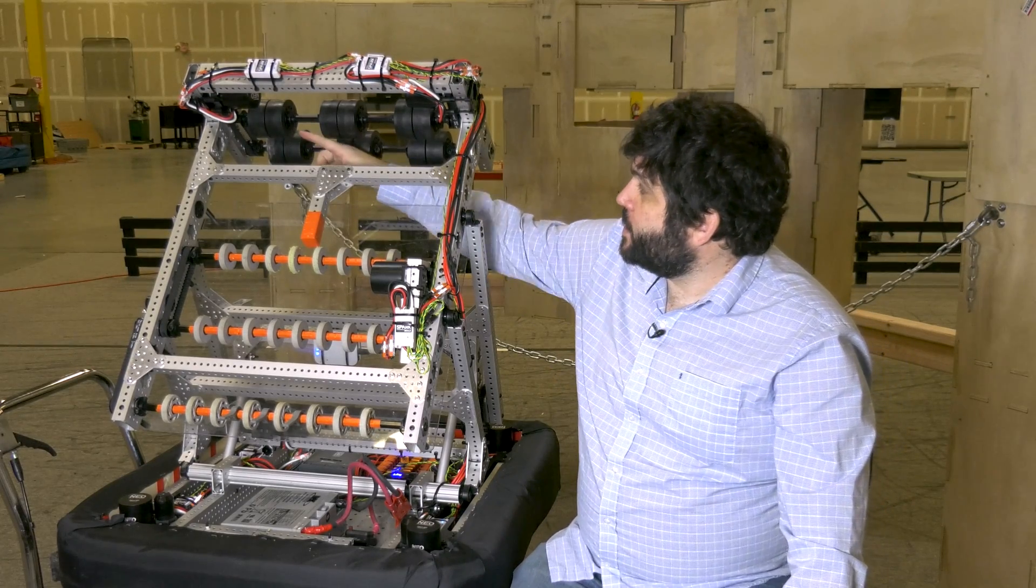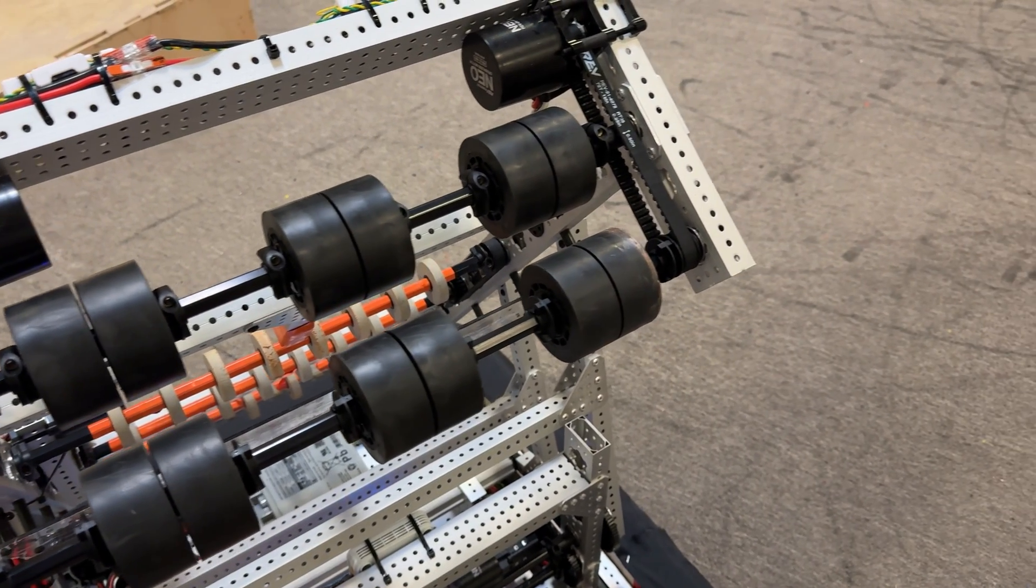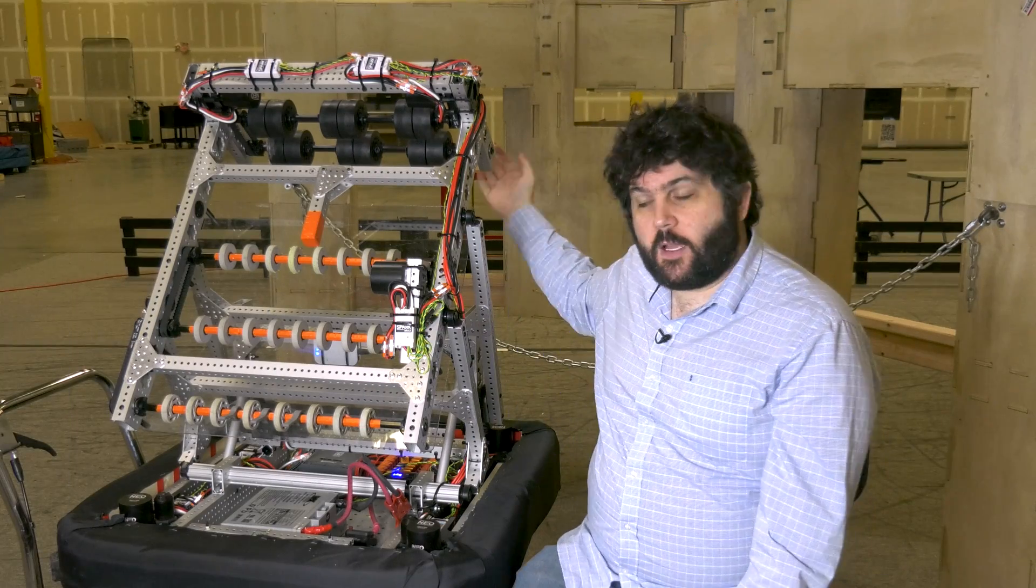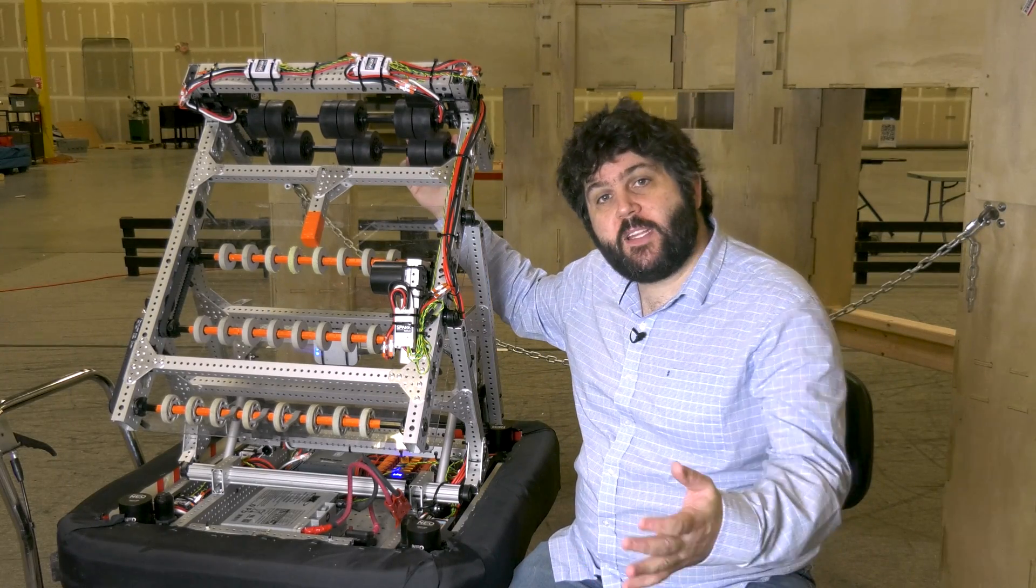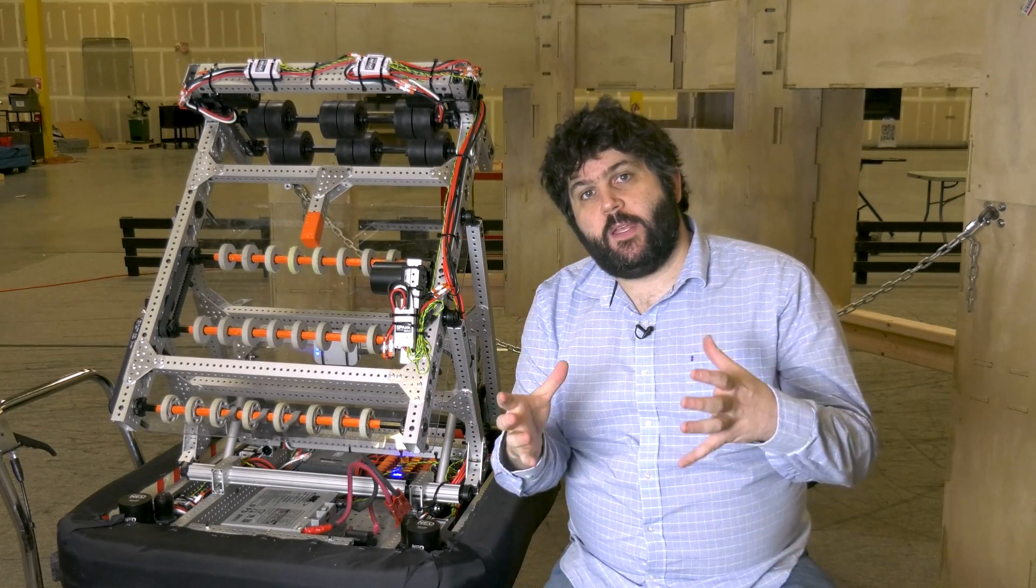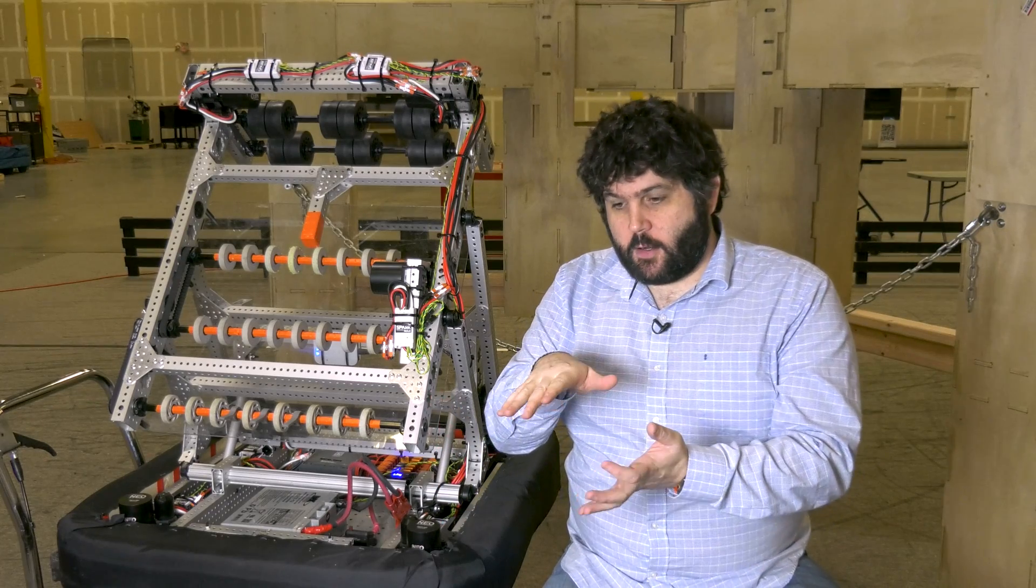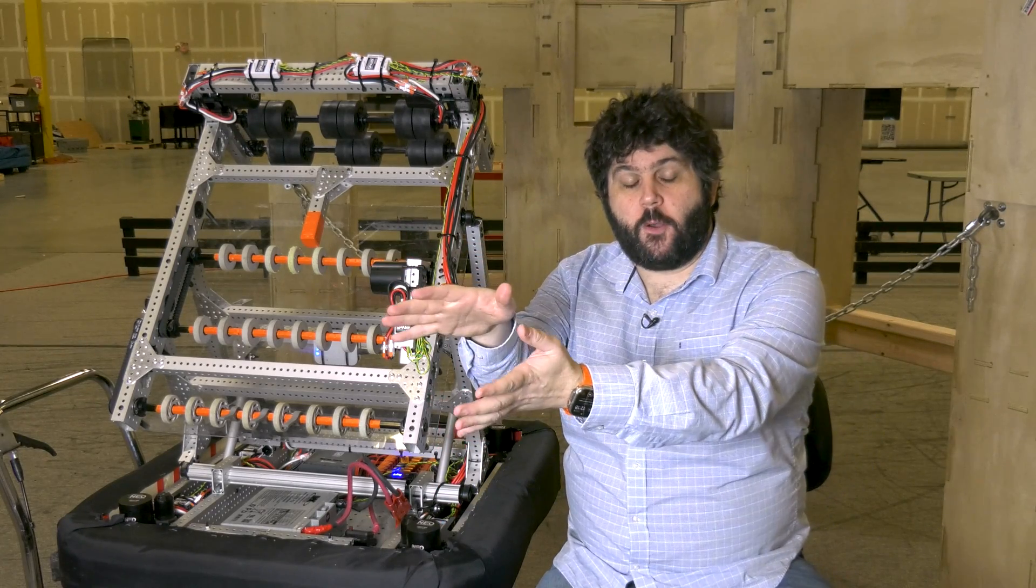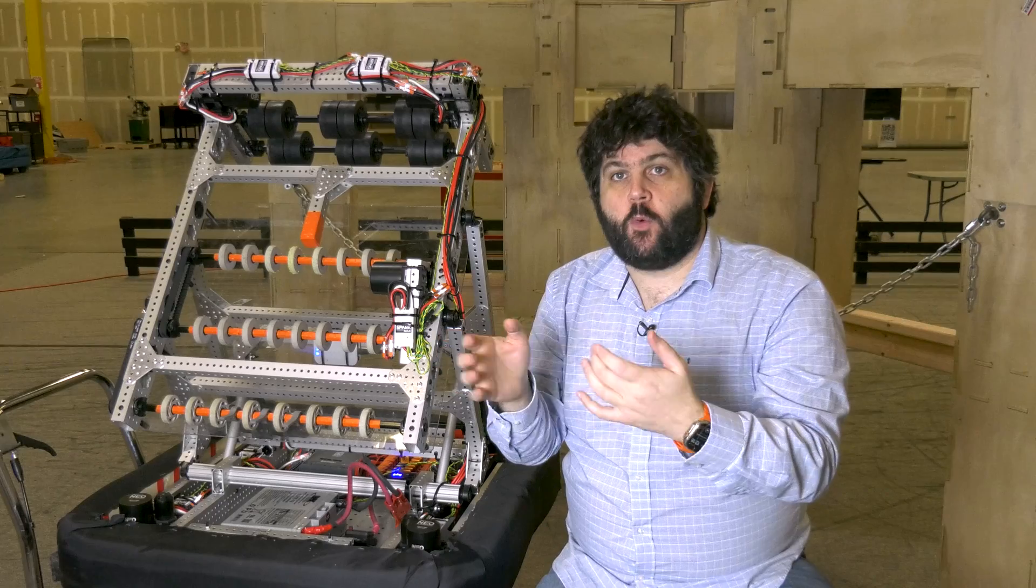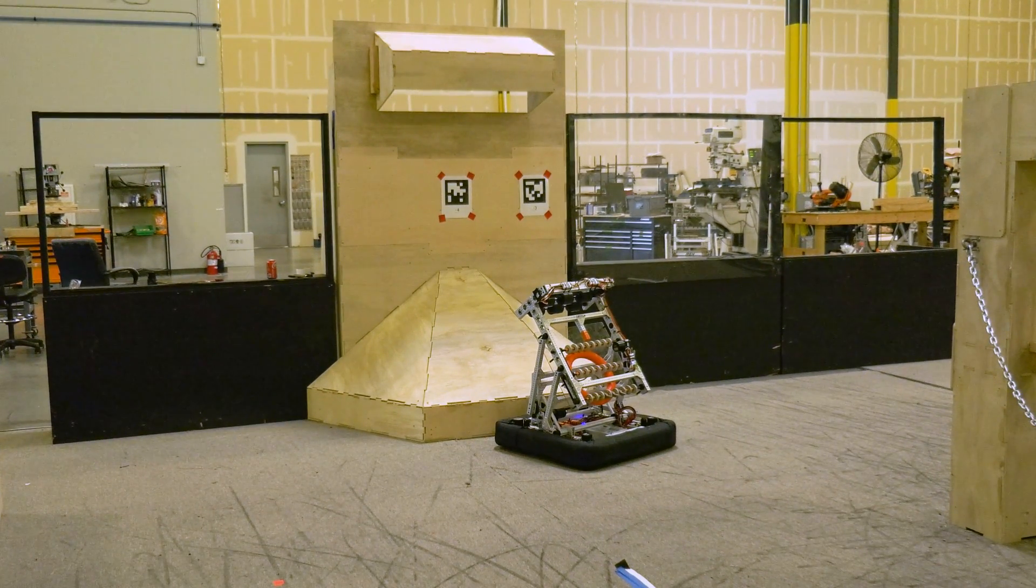Now you'll notice on the top of the shooter, we're using a top and bottom roller shooter. Instead of side wheels, this is more like a traditional style shooter you might see in a game with a ball. And so what that means is that we're not imparting any spin on the ring. We are throwing this like a knuckle ball.